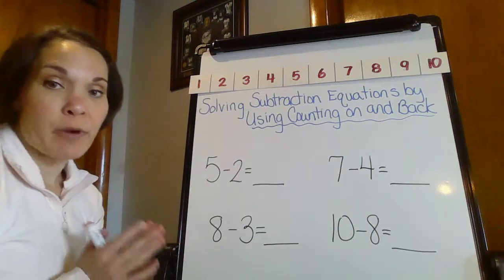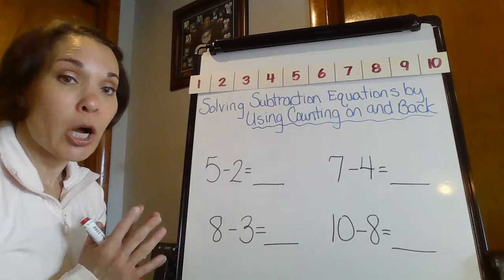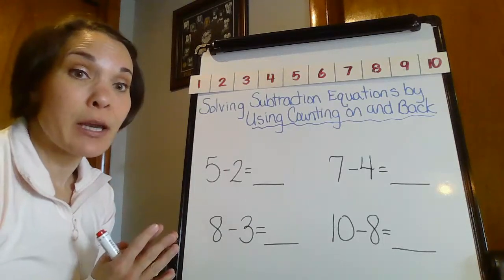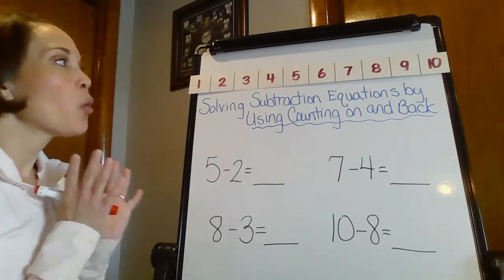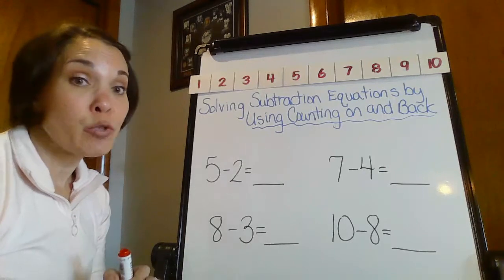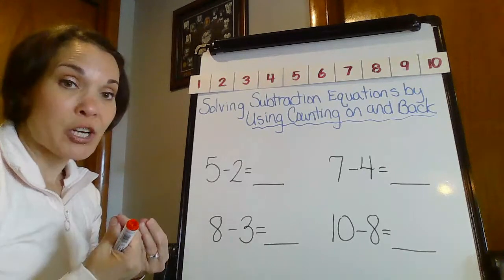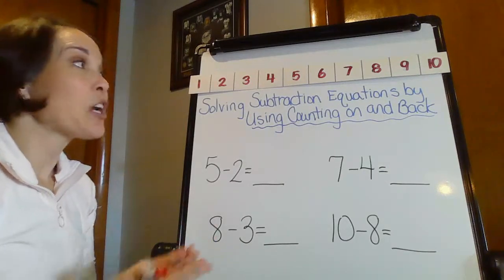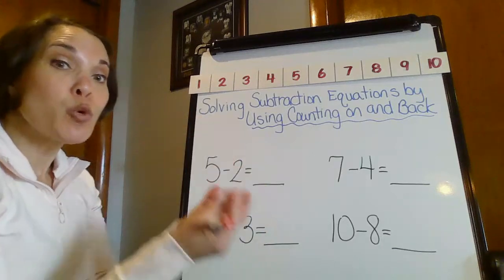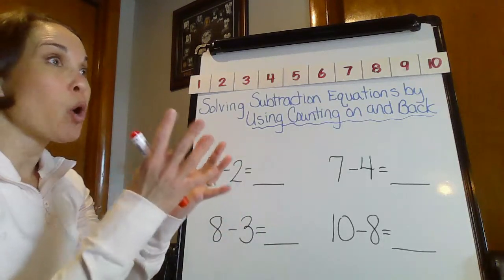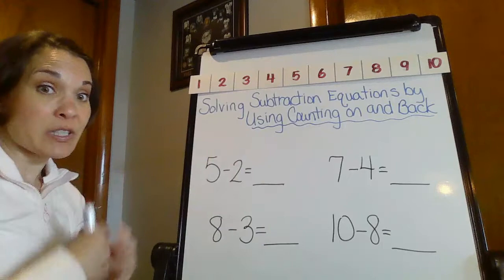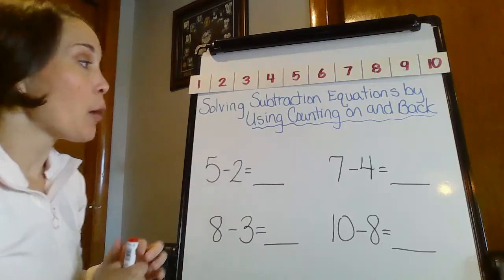So we're going to use two different options. We're going to use counting on, we're going to use counting back. So the one that some of us are used to, when we think about subtraction, we're thinking about back, because we want to get from a higher number to a smaller number. So to get from a higher to lower, you're obviously moving backwards on a number line.